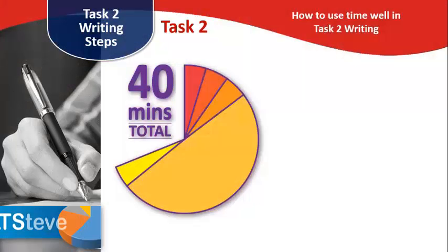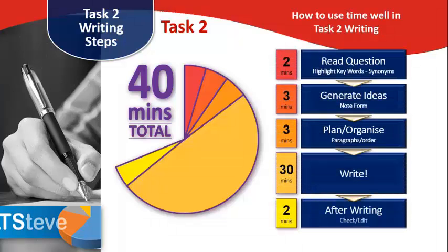Now let's move on and talk about Task 2. In Task 2 writing, we need to consider very carefully our time. This image looks like a pie chart, but it's actually a clock. The best way to use your time in Task 2: read the question, get some ideas, plan and organize your answer, then spend a good 30 minutes writing your answer, and finally spend a little bit of time coming back, checking and editing what you've written.